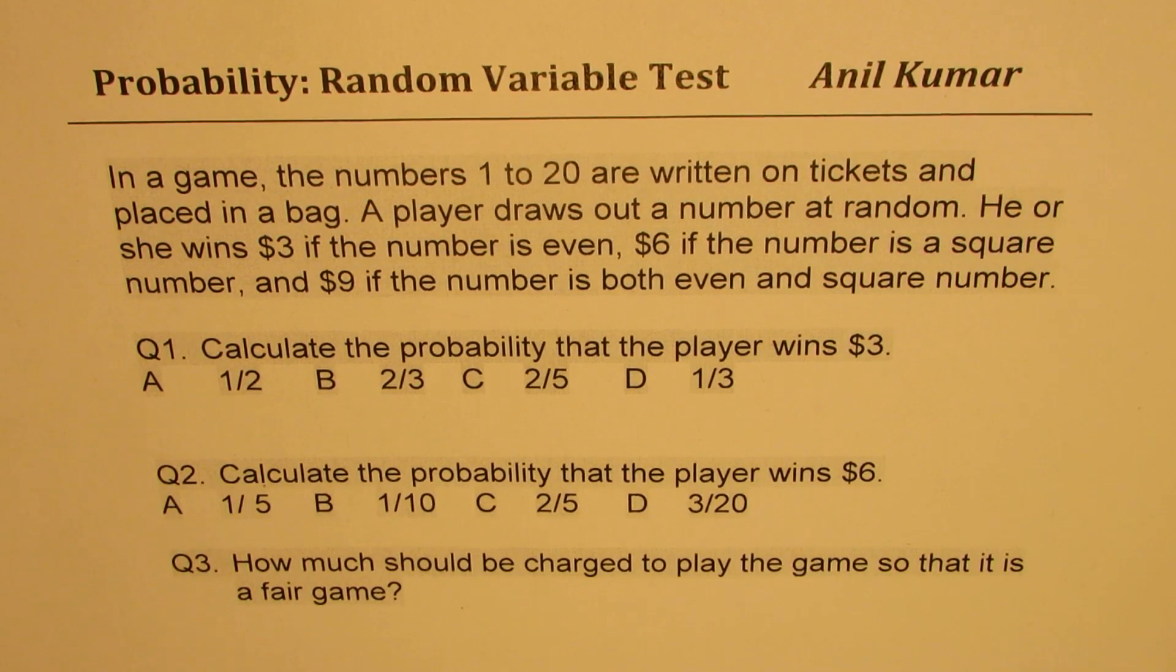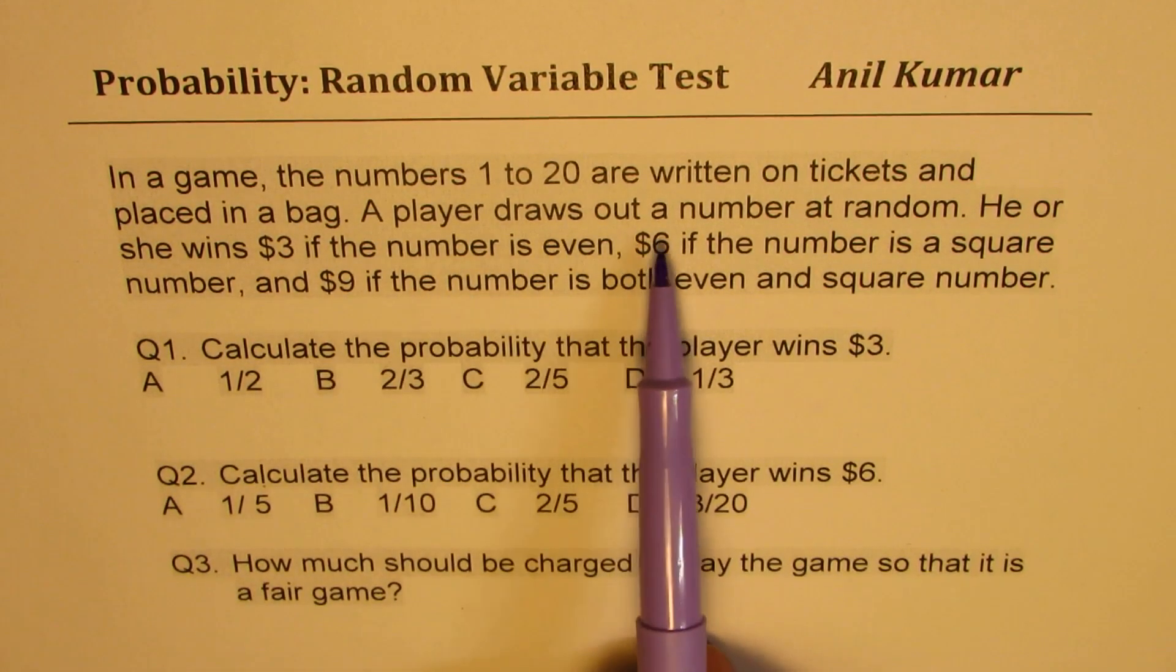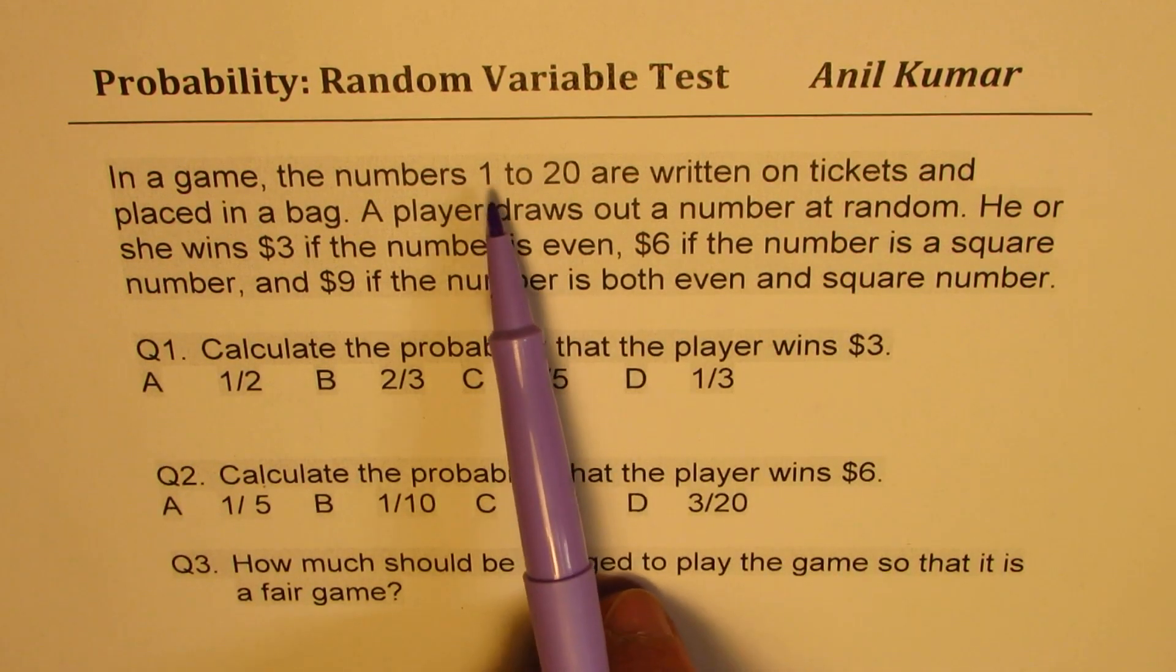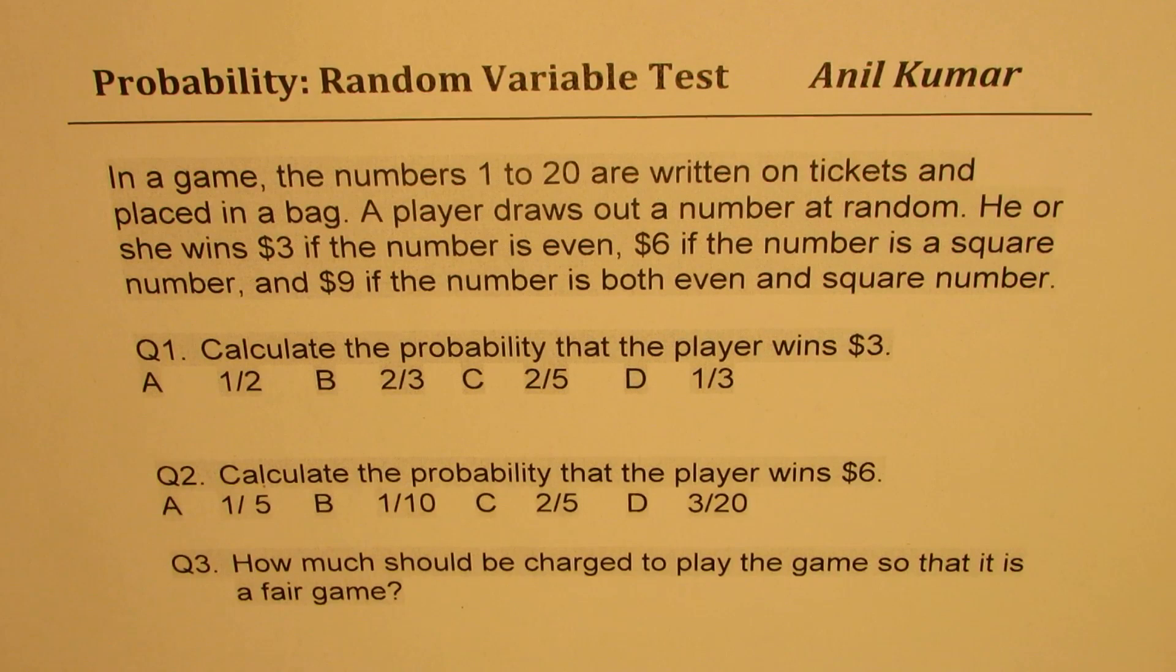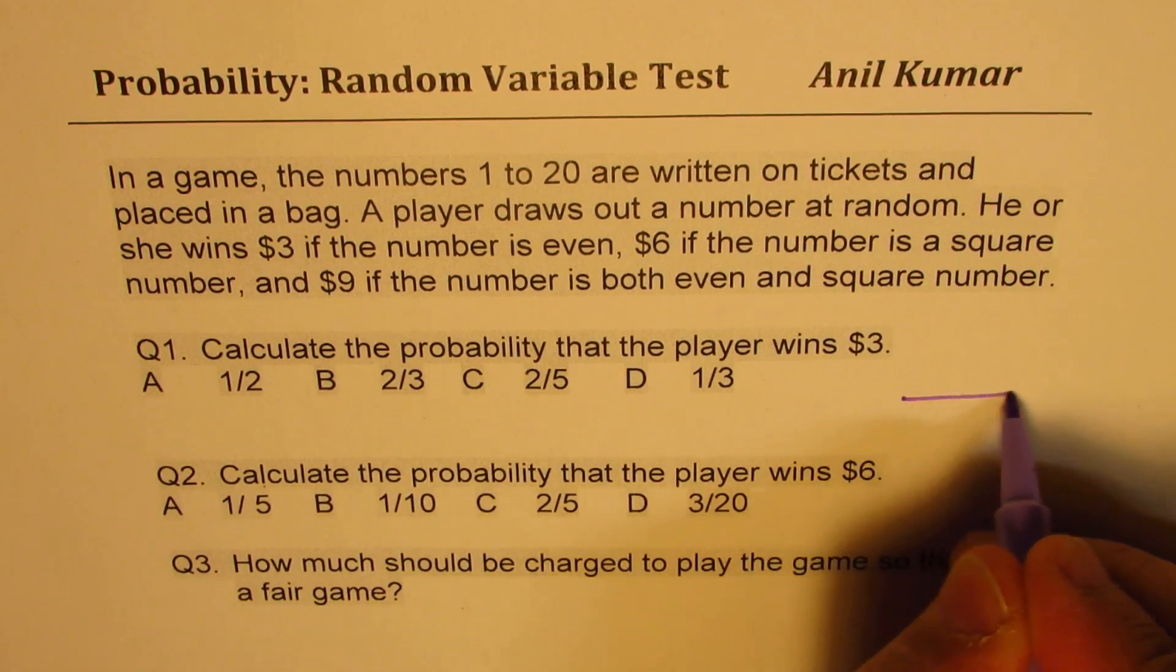Now, let's look into its solution. A player draws out a number at random. This number is from 1 to 20. So total possibilities are 20. So in the denominator, we'll always get 20.